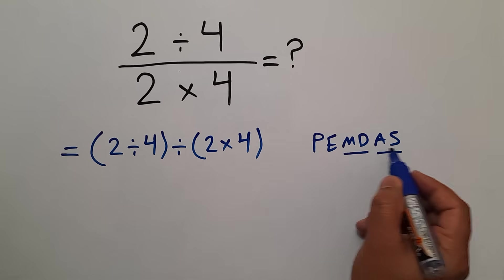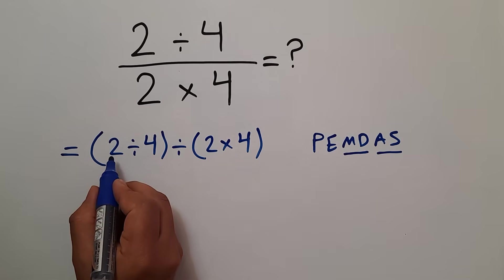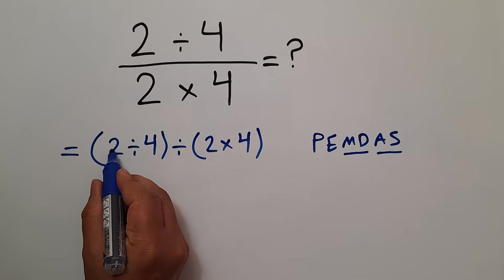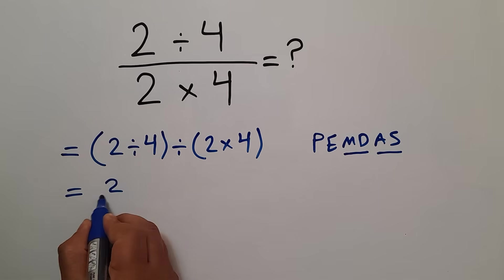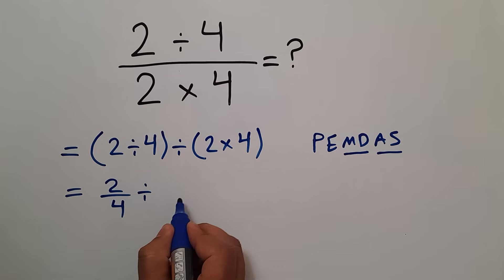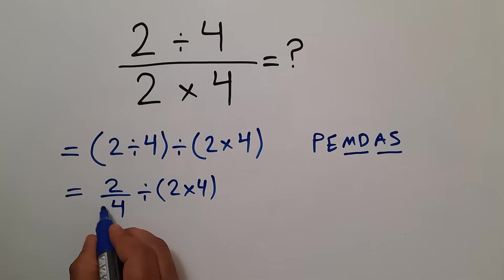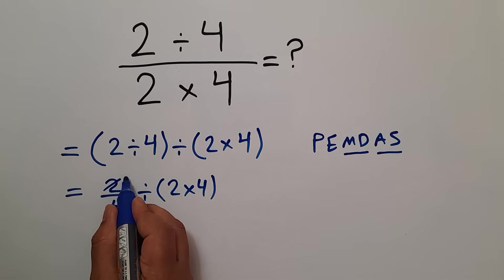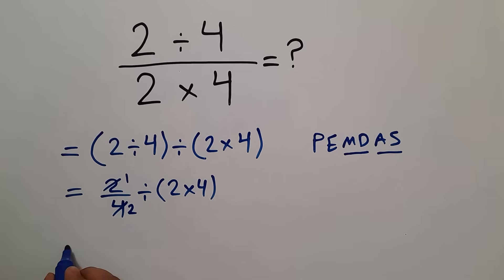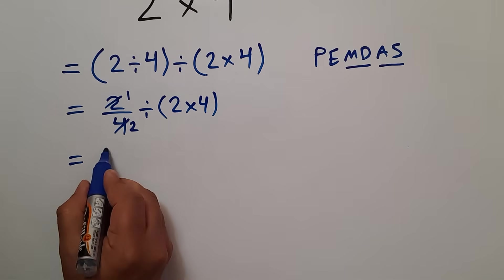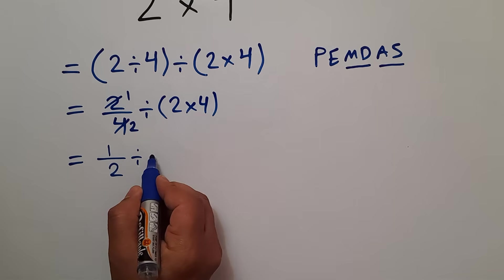According to PEMDAS, we first do parentheses. We have these two parentheses. Inside the first one, we have 2 divided by 4, which can be written as 2 over 4. Then divided by the second parentheses: 2 times 4. We can simplify this fraction — 2 divided by 2 gives us 1, and 4 divided by 2 gives us 2 — so we have 1 over 2. Then divided by 2 times 4, which gives us 8.